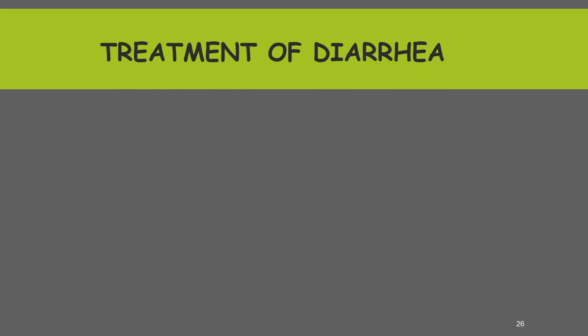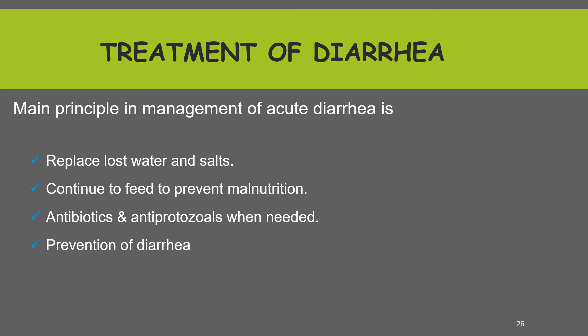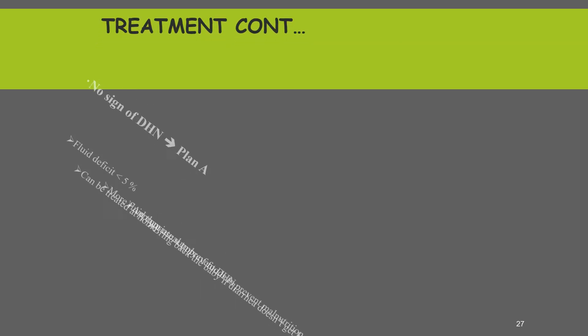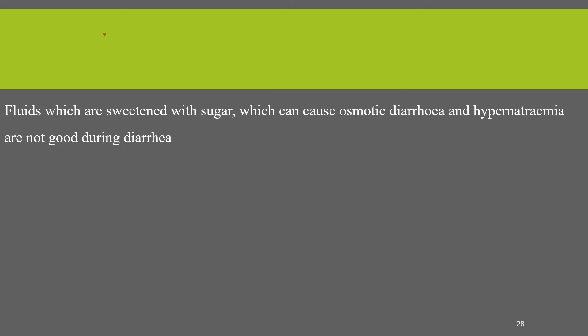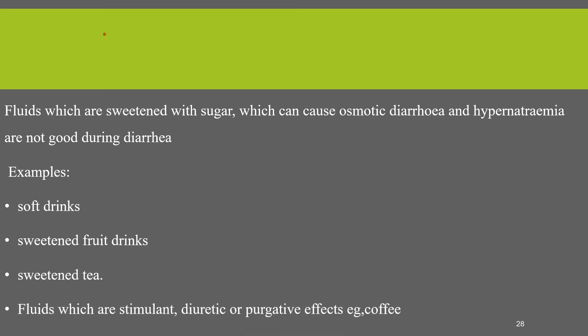There are four principles in management of acute diarrhea: replacing lost water and electrolytes, continue feeding to prevent malnutrition, antibiotics and antiprotozoals when needed, and prevention. Diarrhea without dehydration is treated as treatment plan A — fluid deficit is less than five percent, can be treated at home with more fluid than usual to prevent dehydration, specifically ORS should be given, along with appropriate food to prevent malnutrition, and the family should be counseled to return if diarrhea doesn't improve or gets worse. Fluids sweetened with sugar, which can worsen diarrhea and cause hypernatremia, are not recommended — these include soft drinks, sweetened fruit drinks, and sweetened tea — and stimulant or diuretic fluids such as coffee are also not recommended.